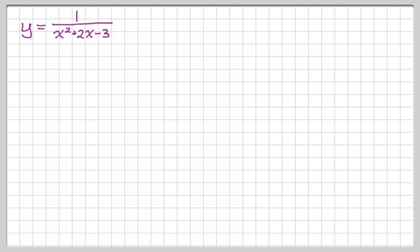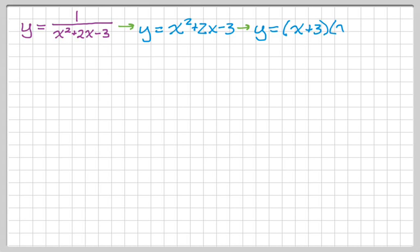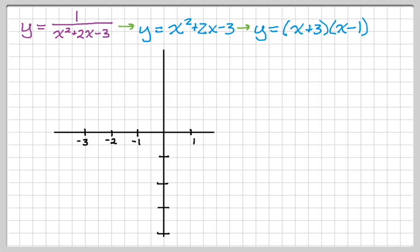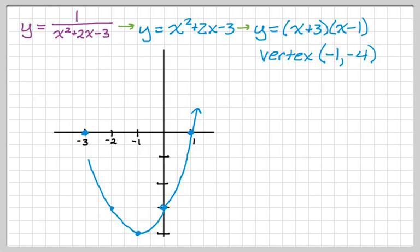Say we have y equals 1 over x squared plus 2x minus 3. I'm going to find the reciprocal, find everything I can about that, and then turn the graph of the reciprocal into the graph I want. I take the reciprocal and factor it. From this I know the zeros are negative 3 and positive 1. The vertex is the average of those, at x equals negative 1, and plugging in gives negative 4. I plot the vertex and the zeros, use the y-intercept for a little more shape, and by symmetry draw the graph. That's the graph of the reciprocal — not the graph I want, but I'm going to turn it into the graph I want.